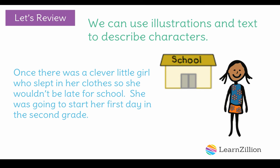When I read this text — 'Once there was a clever little girl who slept in her clothes so she wouldn't be late for school. She was going to start her first day in the second grade' — I noticed several things. The girl is described as clever, which means to be good at doing something. She was clever because she slept in her clothes — she was good at getting ready quickly in the morning so she wouldn't be late for school.